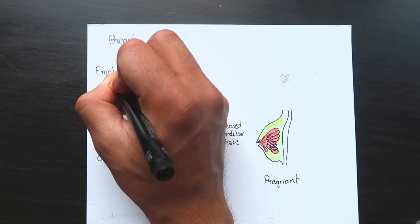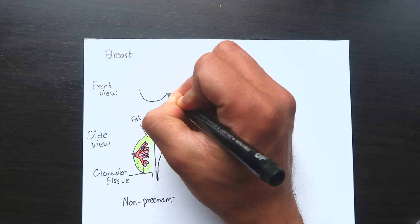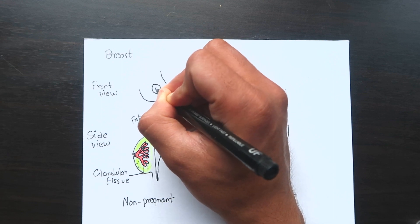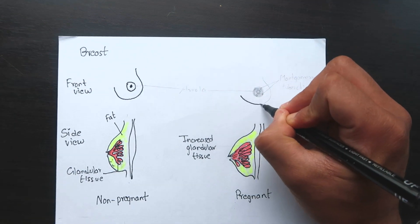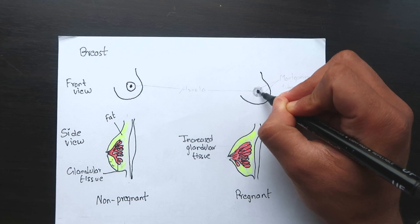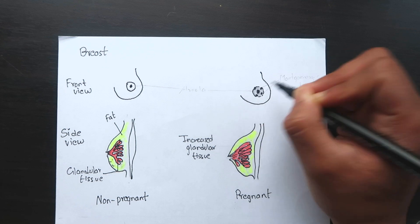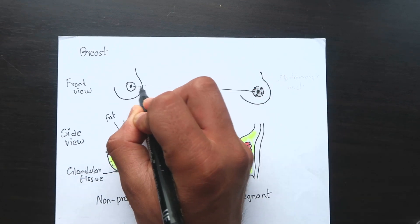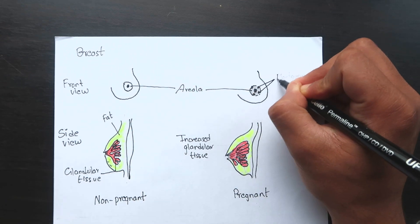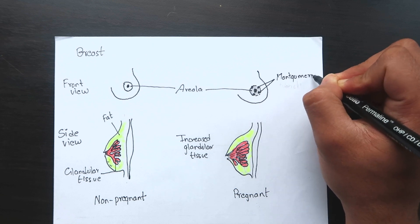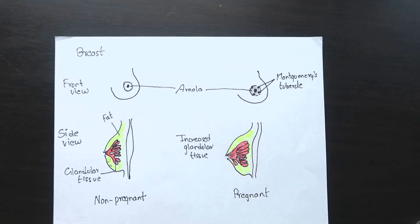The nipples become larger, erectile and deeply pigmented. Variable number of sebaceous glands which remain invisible in the non-pregnant state in the areola, become hypertrophied and are called Montgomery's tubercles. Those are placed surrounding the nipples. Their secretion keeps the nipple and the areola moist and healthy.